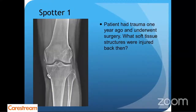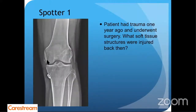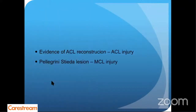Time for some spotters. What soft tissue structures were injured previously? There are two soft tissue structures. So there is obviously evidence of ACL reconstruction, so there was an ACL injury. And if you see here, there are Pellegrini-Stieda lesion calcifications, so obviously there was an MCL injury as well in the past.